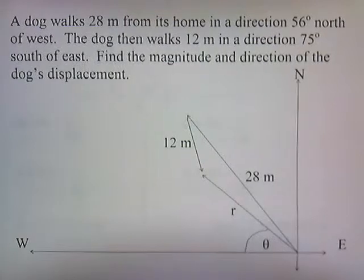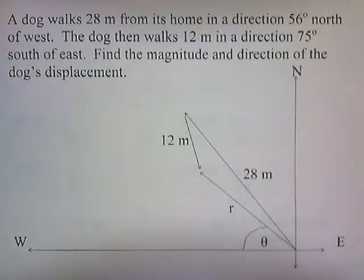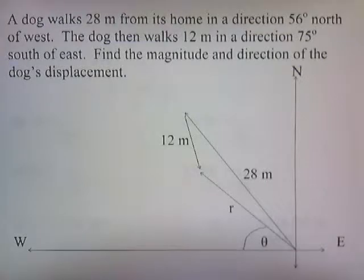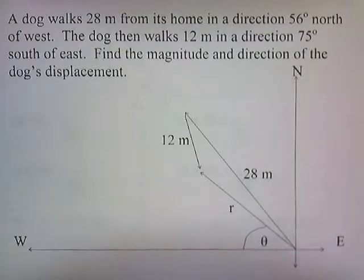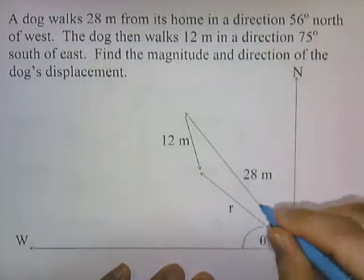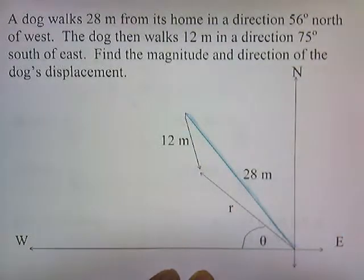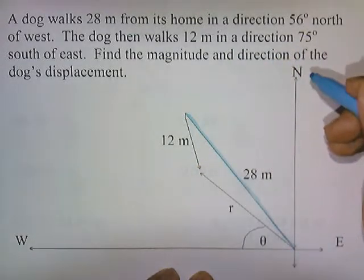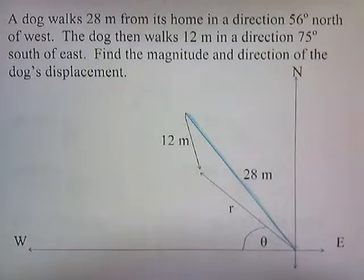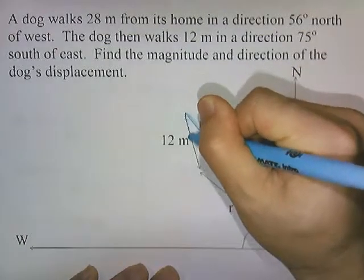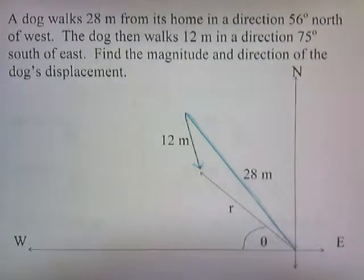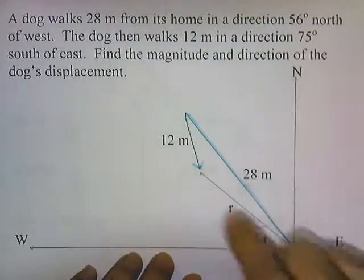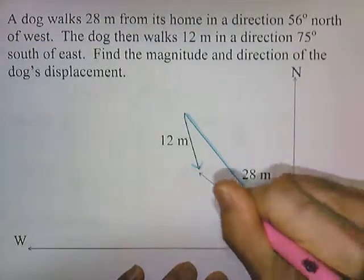A dog walks 28 meters from its home in a direction 56 degrees north of west. The dog then walks 12 meters in a direction 75 degrees south of east. Find the magnitude and direction of the dog's displacement. Our dog starts here and walks 28 meters in a northwest direction, then walks 12 meters in a southeast direction. You draw a line from the tail of the first to the head of the second, and there's your resultant.